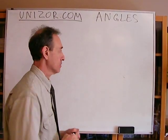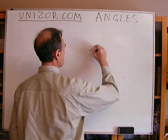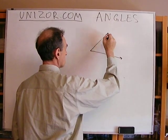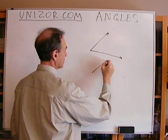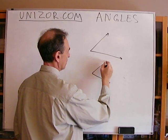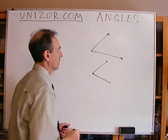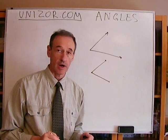Basically, an angle is a geometrical figure which is formed by two rays, or if you wish, two segments. It doesn't really matter.